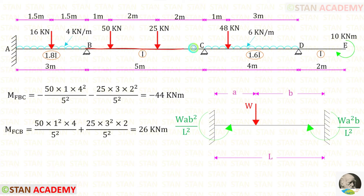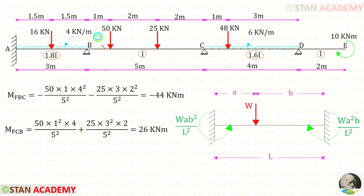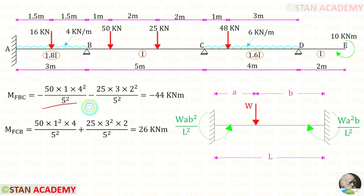Now let us take the span BC. In span BC there are two eccentric point loads, 50 kN and 25 kN. For an eccentric point load in a fixed beam, the formulas to find the fixed end moments are WAB²/L² and WA²B/L². For the first load: W is 50, A is 1, B is 4, and L is 5. For the second load: W is 25, A is 3, B is 2, and L is 5. After adding both contributions, we get minus 44 kN·m and positive 26 kN·m.